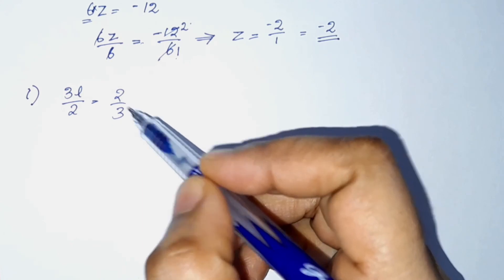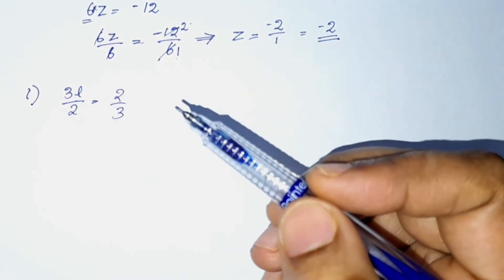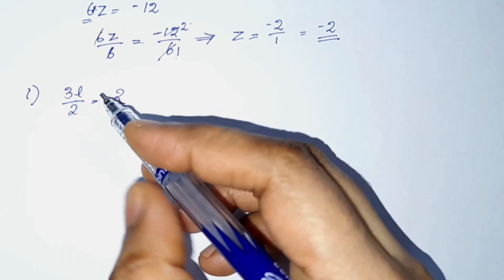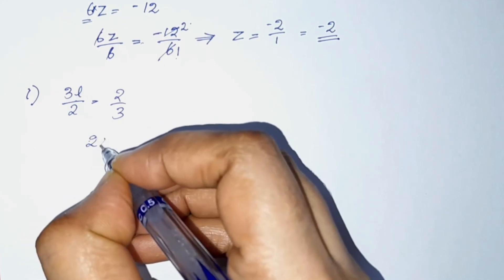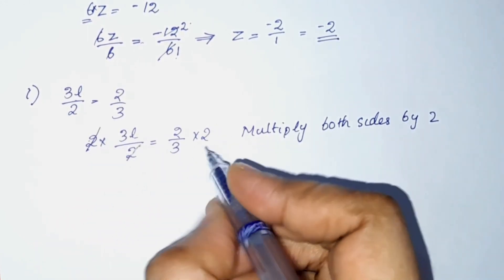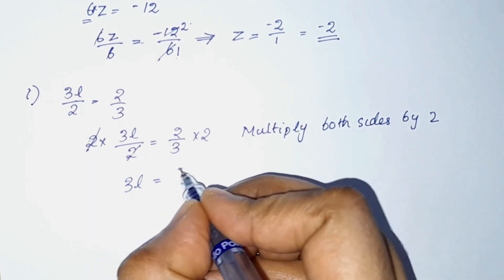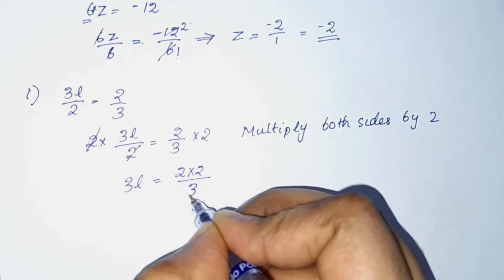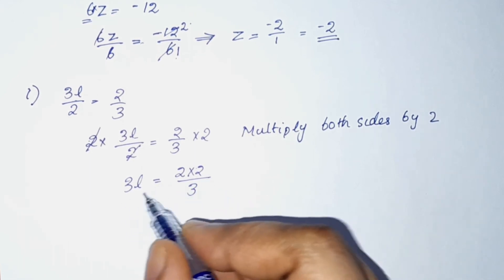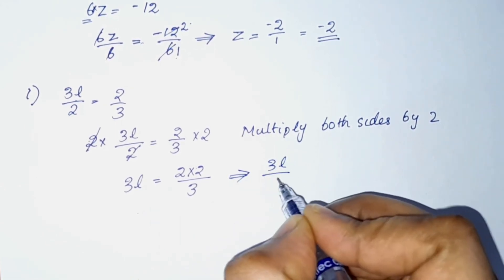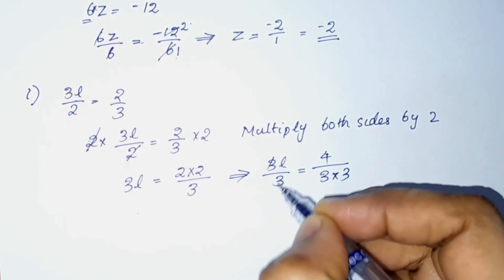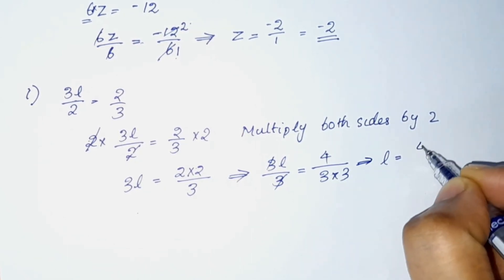The equation is 3L by 2 is equal to 2 by 3. Multiplying both sides by 2, 2 and 2 cancel. 3L is equal to 2 into 2 by 3, which is 4 by 3. Then multiplying both sides by 3, 3 and 3 cancel, giving L is equal to 4 by 9.